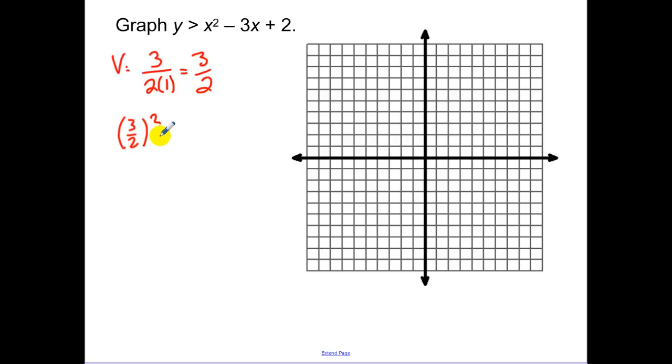And notice how I can do this all without a calculator. So I have 9 fourths minus 9 halves minus 2. Getting everything in a common denominator, we have 9 fourths minus 18 fourths minus 8 fourths. Actually, I caught my mistake before I got too far. Those should be plus.